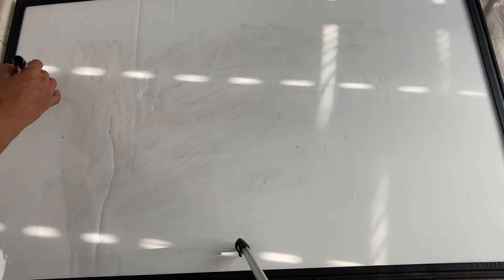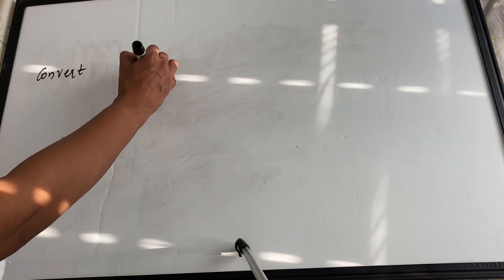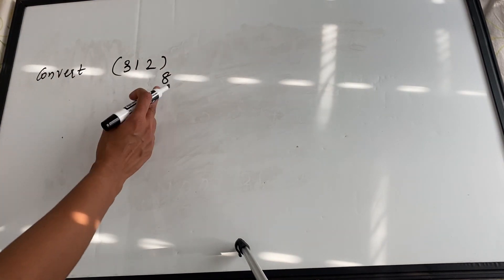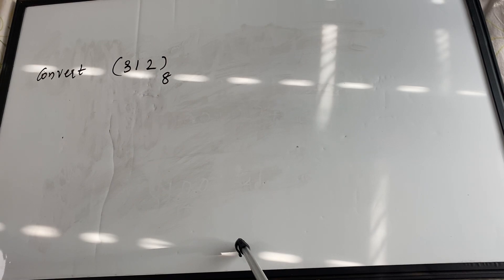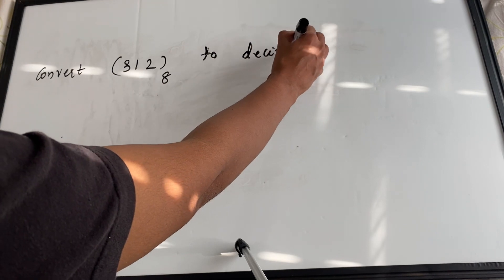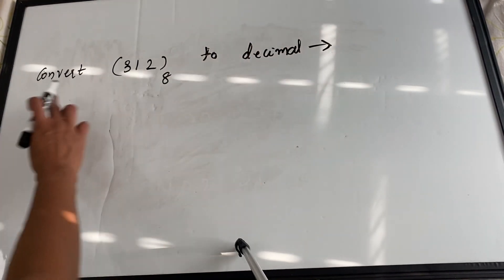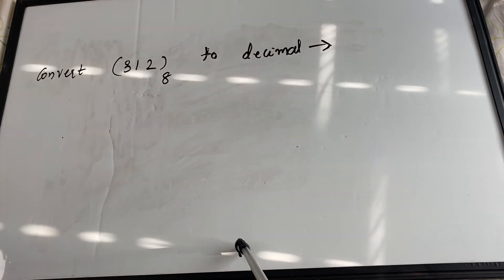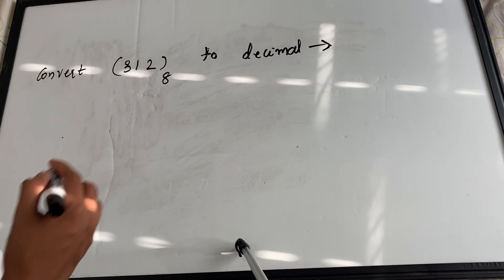The next question is: convert 312 base 8 to decimal. The number 312 with base 8 is an octal number, and we need to convert it to decimal. To convert an octal number to decimal, you multiply the digit at each position by the corresponding power of 8.